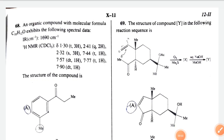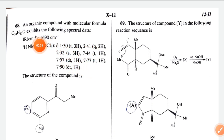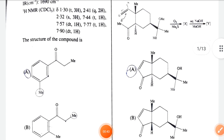Hello guys, today we will discuss the 24th WBC8 exam organic paper. First question: an organic compound with molecular formula C10H12O exhibited the following spectral data. IR data at 1690 cm⁻¹ indicates a ketone group, and NMR data are also given. The correct option is option A.